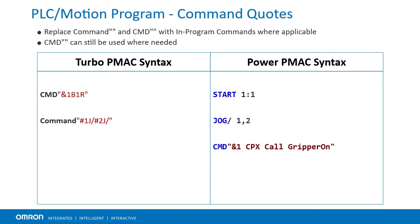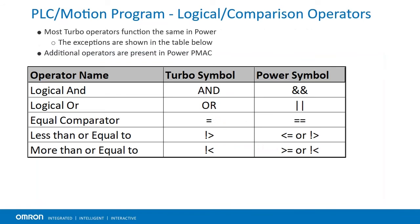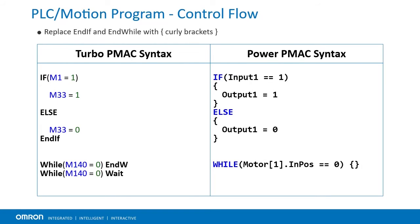Turbo PMAC allowed long and short command quotes. In most cases, command quotes can be replaced with in-program commands when migrating to Power PMAC. Where this is not possible, only short command quotes can be used. Most operators used in Turbo PMAC function the same in Power PMAC. The logical AND and logical OR operators are now symbols instead of words. Checking if two values are equal now uses a double equal sign. Less than or equal to, or greater than or equal to, operators can still be used the same as in Turbo, or they can be written in a more standard form. Turbo PMAC had in-diff and in-well commands; for Power PMAC, replace these with curly brackets.